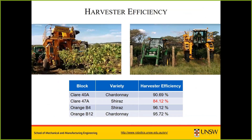We also needed to account for harvester efficiency. We went out and tediously measured fruit dropped onto the ground by the harvester for each of the four blocks. Harvester efficiency ranged from 84% up to 96%, depending on how careful the drivers were and whether it was a pull-behind or self-propelled harvester. Most fruit lost was dropped onto the ground rather than remaining on the vine, so improving harvesters to capture that fruit is clearly worthwhile.